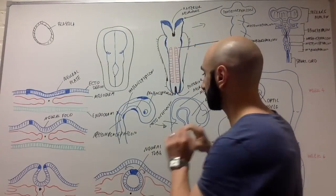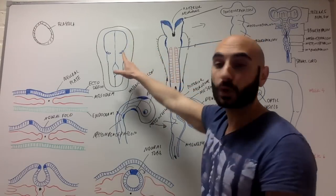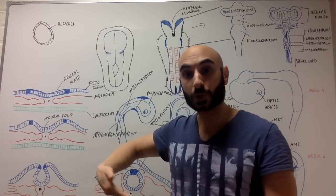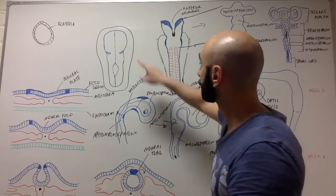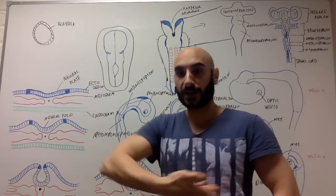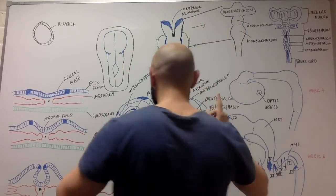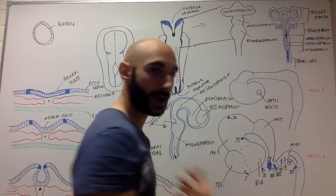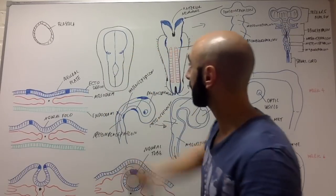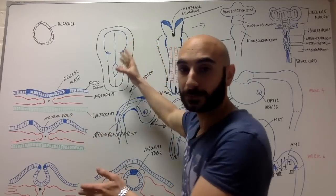To understand what's going on better, here is the dorsal view of the embryo, whereas the other image is a cross-sectional or transverse view. The dorsal view is looking at the embryo from the back. Here we have the neural tube, and it hasn't been fully developed yet.